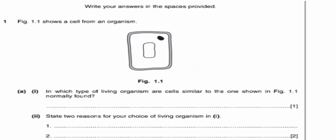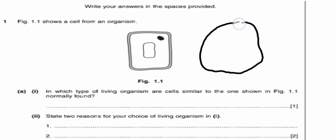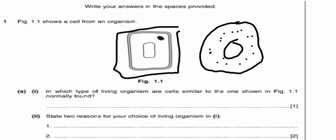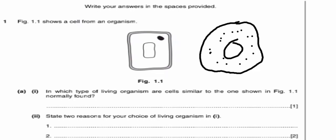Because an animal cell looks like this one here — this is a rough sketch of an animal cell, this is how an animal cell looks like. So for question A, Roman numeral one, the answer is plant cell.